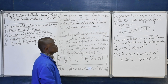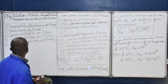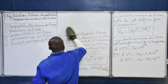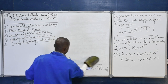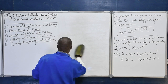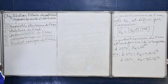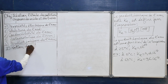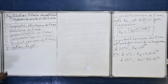Voilà ce qu'on appelle le produit ionique de l'eau. Après le produit ionique de l'eau, nous allons passer à la notion de pH. Grande 2 : notion de pH.